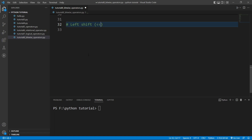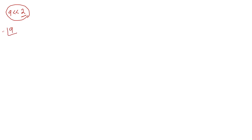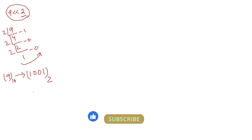Let's have a look at an example. I want to calculate 9 left shift 2. The meaning of this expression is: I need to shift the bits of 9 towards the left by 2 positions. For that, I need to convert 9 into binary form first. Dividing by 2: 9 ÷ 2 remainder 1, 4 ÷ 2 remainder 0, 2 ÷ 2 remainder 0. Reading from bottom to top, 9 in decimal is represented as 1001 in binary.